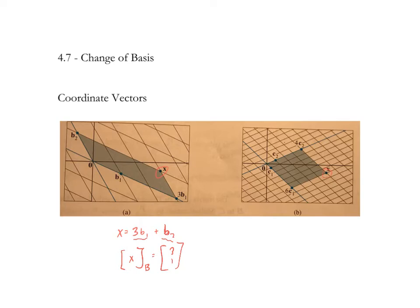In the image on the right, we're given the vector x described in terms of a different basis, basis c. So we could say x equals 6c1 plus 4c2, or more formally, the coordinate vector for x relative to basis c equals (6, 4). But it's the same x in both cases.